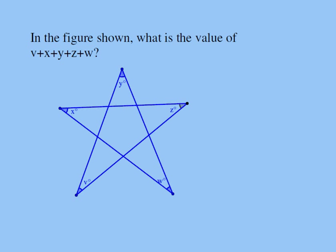Now x, y, z, v, and w are angles, the five angles of a pentagram. This is one way we can draw a pentagram. The lines have to be straight, kind of like a star.